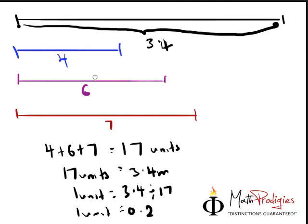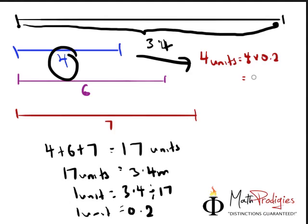They're asking us for the shortest piece. In this case, the shortest piece is 4. Therefore, 4 units equals 4 times 0.2. In other words, the answer is 0.8 meters. And that's how you find the answer.